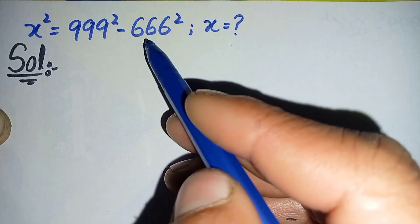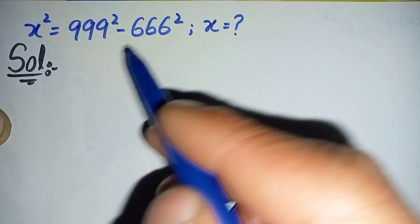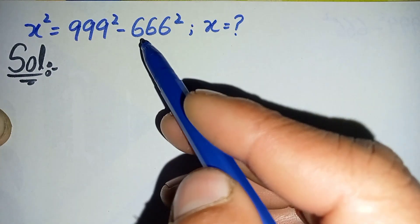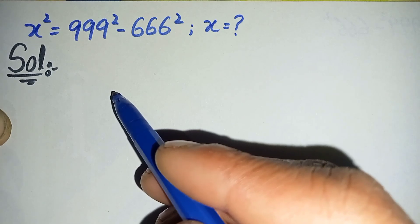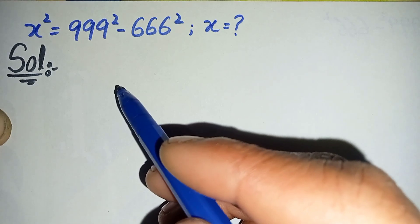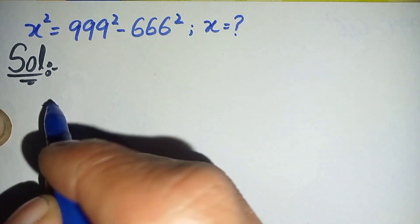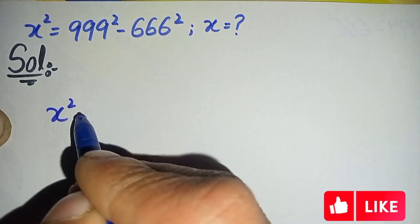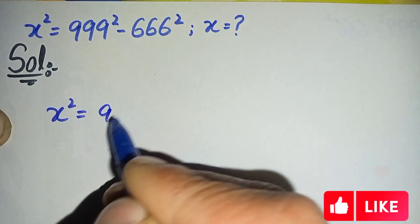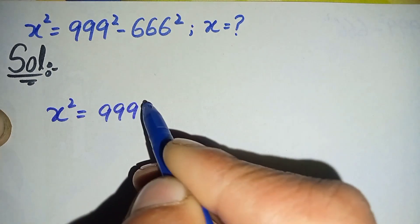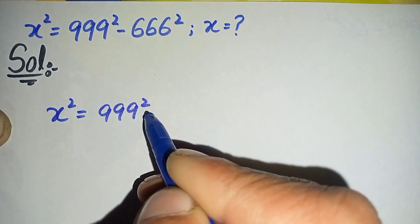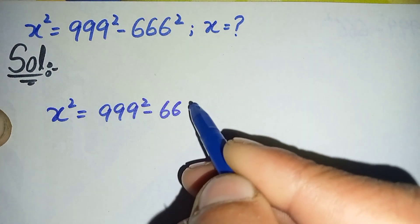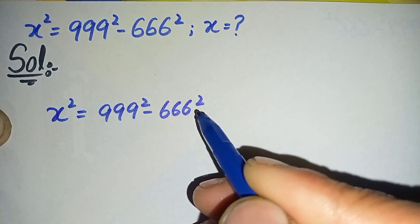Now to solve this math problem properly and step by step, first we will write the solution. Then we will rewrite this question in the solution again and we will try to solve it step by step. So the question is: x squared is equal to 999 squared minus 666 squared.